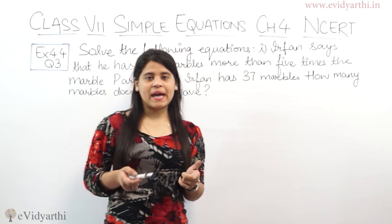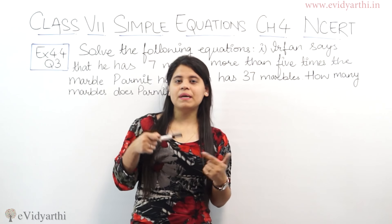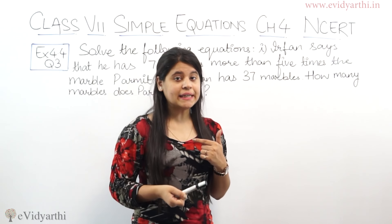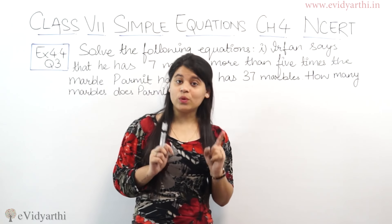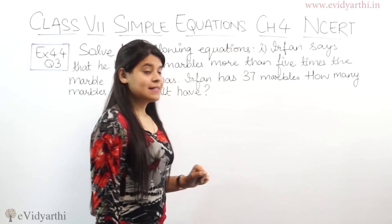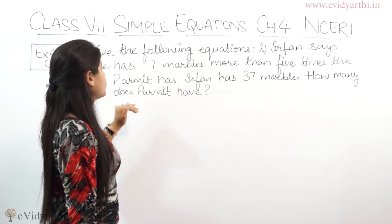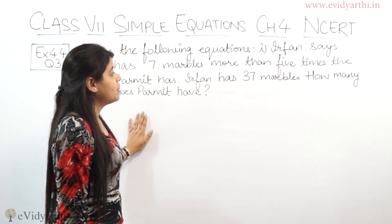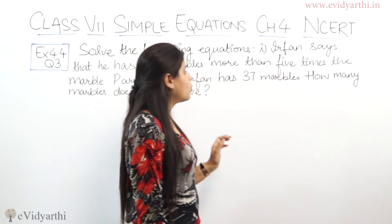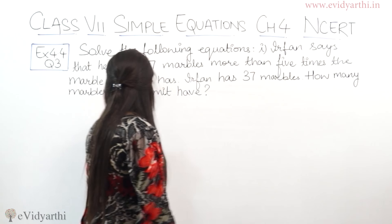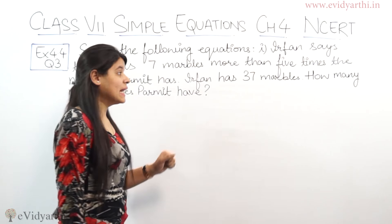In exercise 4.2, I think, when we did an exercise in which we had to form equations, we didn't know how to solve it. But we have to form equations and this is the same question. So let's do it again. Irfan says that he has 7 marbles more than 5 times the marbles Parmit has. What does it mean?